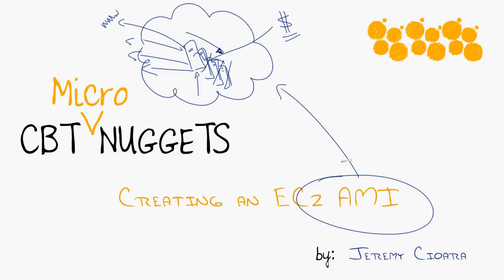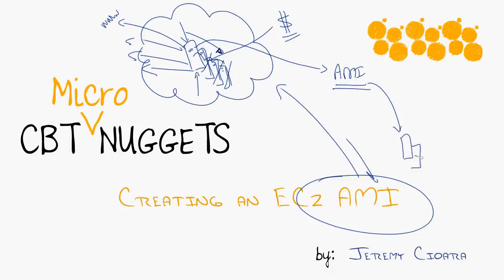Now we come to what is an AMI. An AMI is your perfect server on ice. Essentially, you can create this perfect image, install all the right patches, put all the right software on there, put all the right support files — essentially create the perfect image of that — and then save it, store it as an Amazon Machine Image. Once you have this Amazon Machine Image, you have a frozen hard drive that you can use to generate all these additional servers.